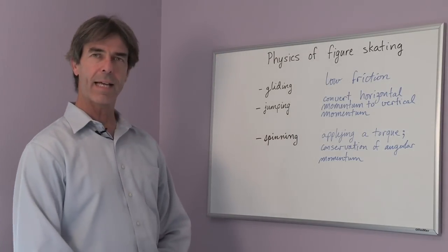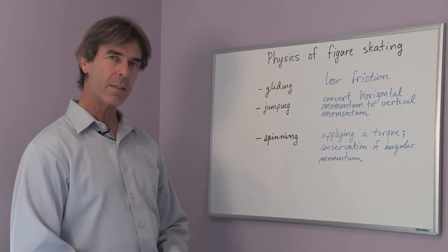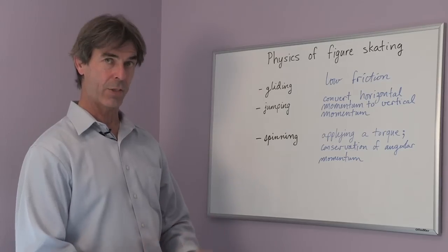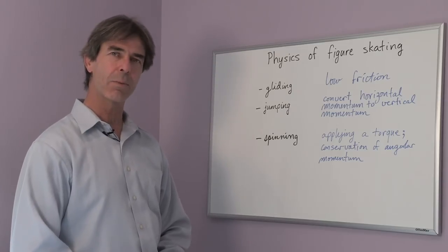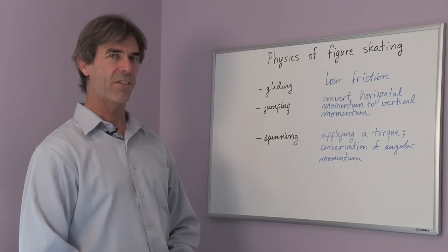Finally, spinning has two parts. You first have to apply a torque to get a spin, and then there's something called conservation of angular momentum, which allows you to spin very fast.